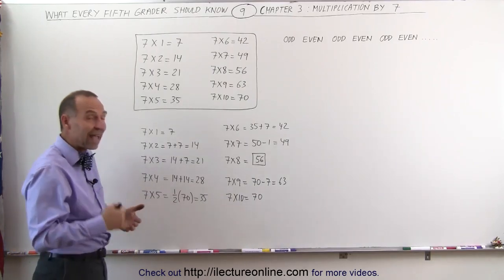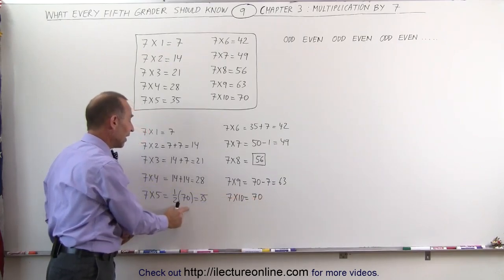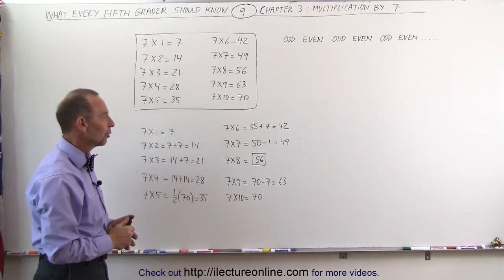7 times 5 is the halfway point. We take 7 times 10, which is 70, and divide it by 2, and we get 35. That's very straightforward.